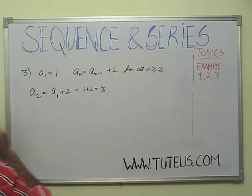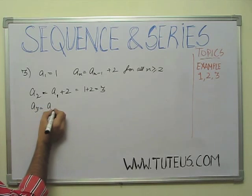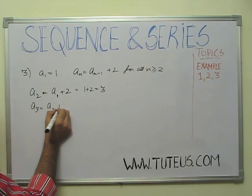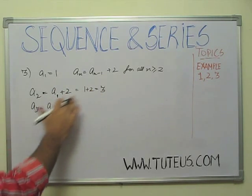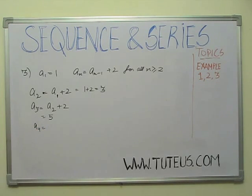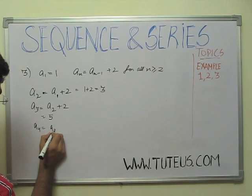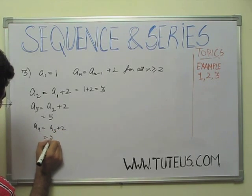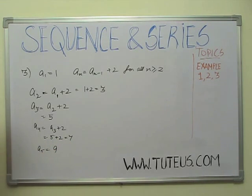Now, if you find a3, how much will it be? It will be a3-1, which means 2, plus 2. So, the previous term, I will add a2 plus 2, it will be 5. A4, how much will it be? We can add a3 plus 2, which means 7. Similarly, a5, how much will it be? 9.